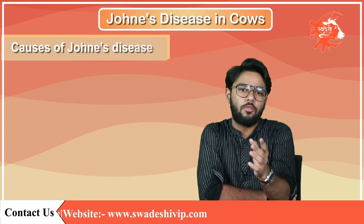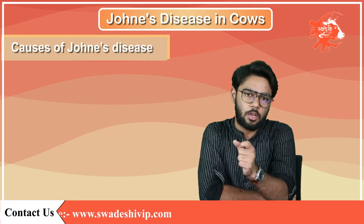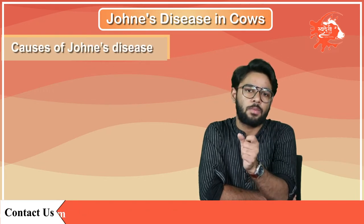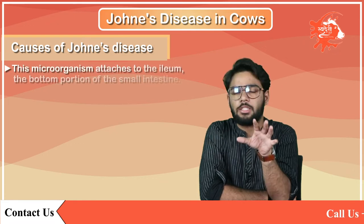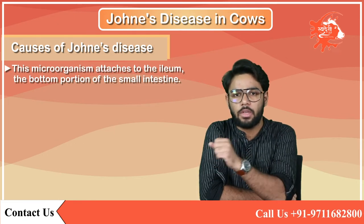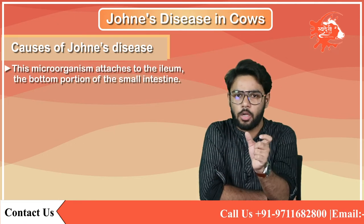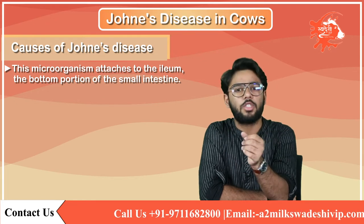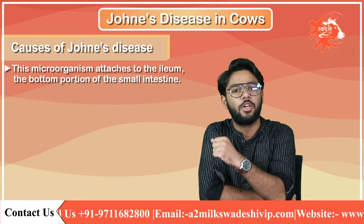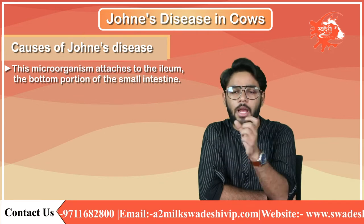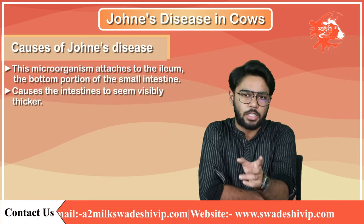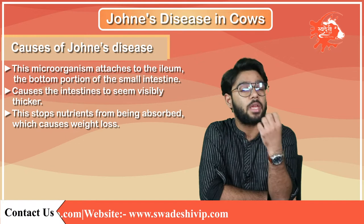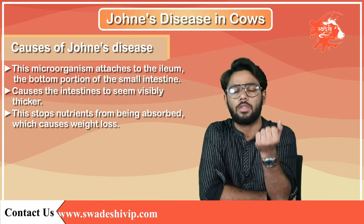Ruminant enteritis, known as Johne's illness, is brought on by paratuberculosis. This microorganism attaches to the ileum, the bottom portion of the small intestine. As part of the immune response, sick tissues make an effort to grow new healthy tissues, which causes the intestines to appear visibly thicker. This stops nutrients from being absorbed, which causes weight loss.